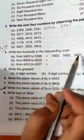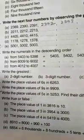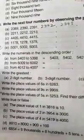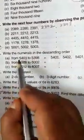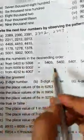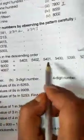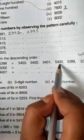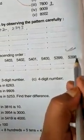Write the numerals in the descending order means number given you have to write in descending order means largest to smallest. How you will write in descending order? Your first question is write the numerals in the descending order from 5403 to 5398. Your answer is 5403, 5402 in decreasing order, 5401 after that 5400, after that 5399, 5398. Like this you do next two questions.